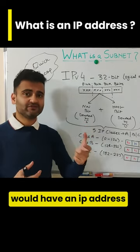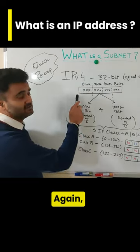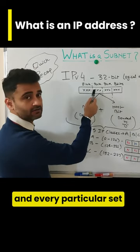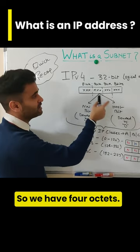These addresses are divided into 8-bit sets, and every particular set is called an octet. So we have four octets, meaning 8 times 4 gives us a 32-bit logical address.